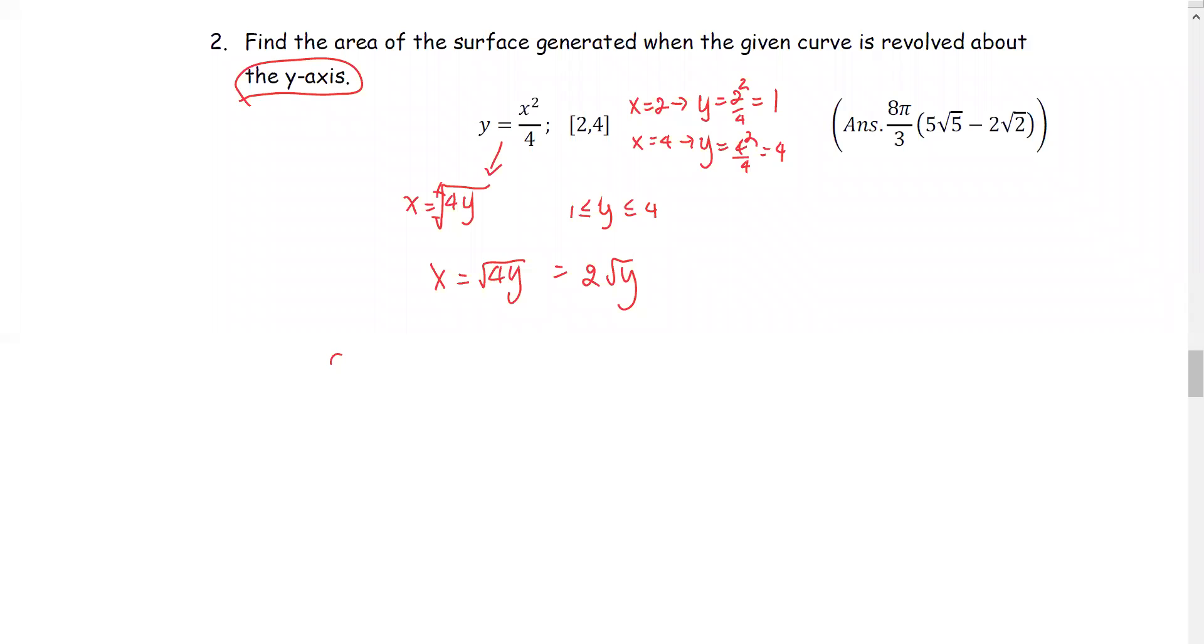The formula S, or the surface area, is the integral from the low y, which is 1, to the high y, which is 4, of 2 times pi times the function. In this case, it's the function x, or 2 times square root y, multiplied by the segment length, which is square root of 1 plus x prime squared, with respect to y.